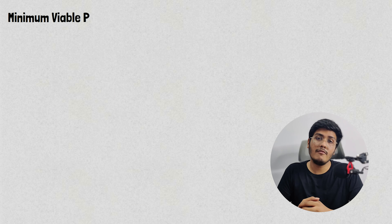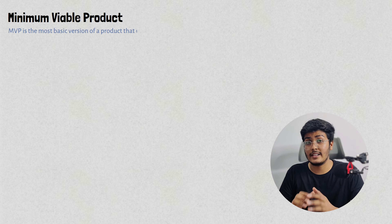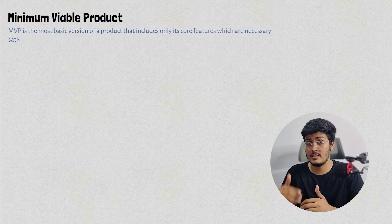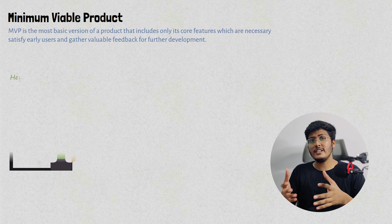MVP, or Minimum Viable Product, is the most basic version of the product that contains only its core features which are necessary to satisfy the early users and gather valuable feedback for further development.